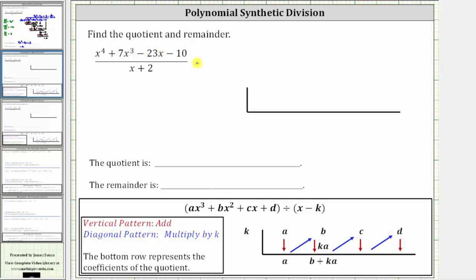So looking at this quotient, you need to think of the dividend as one x to the fourth plus seven x cubed plus zero x squared, and then minus 23x minus 10.